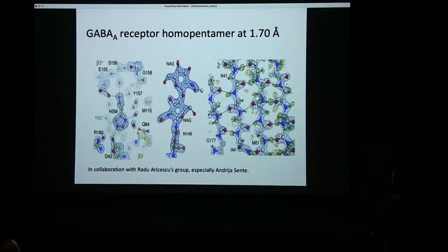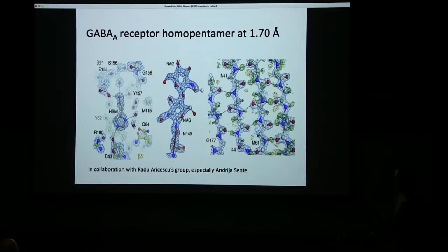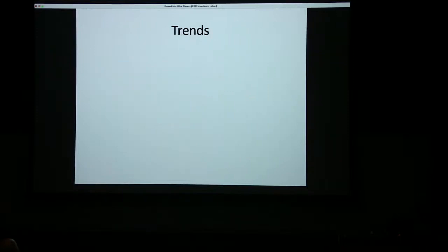We also put on some samples from Radu Aricescu at the Neurobiology Division at the LMB: the GABA-A receptor, a homo-pentameric model system. That went all the way to 1.7 angstroms. You can see beautiful density for ligands and some sugars. Even at 1.7 angstroms we think you can see hydrogen atoms in difference maps — this beautiful beta sheet with loads of hydrogens being shown in the difference map.